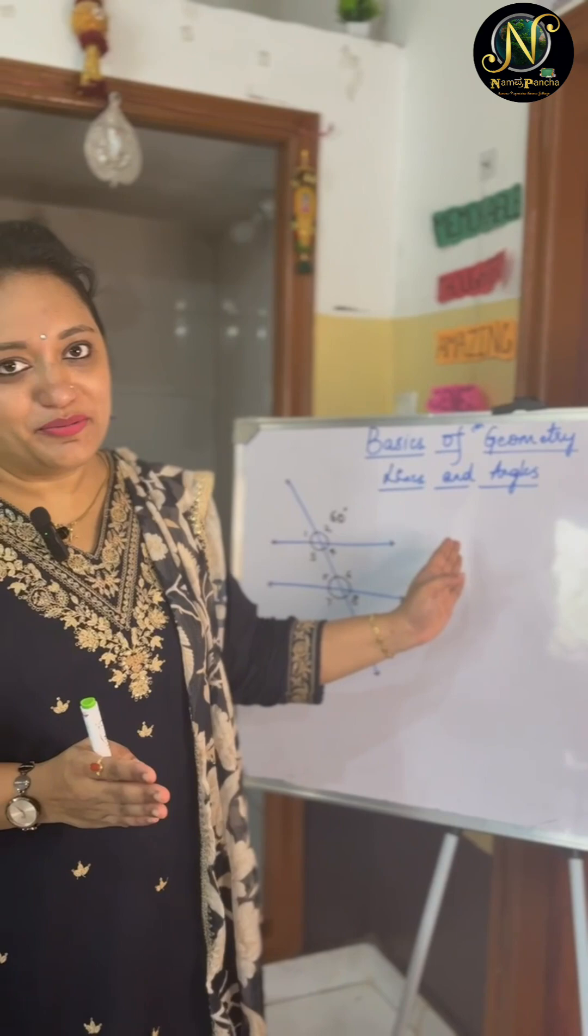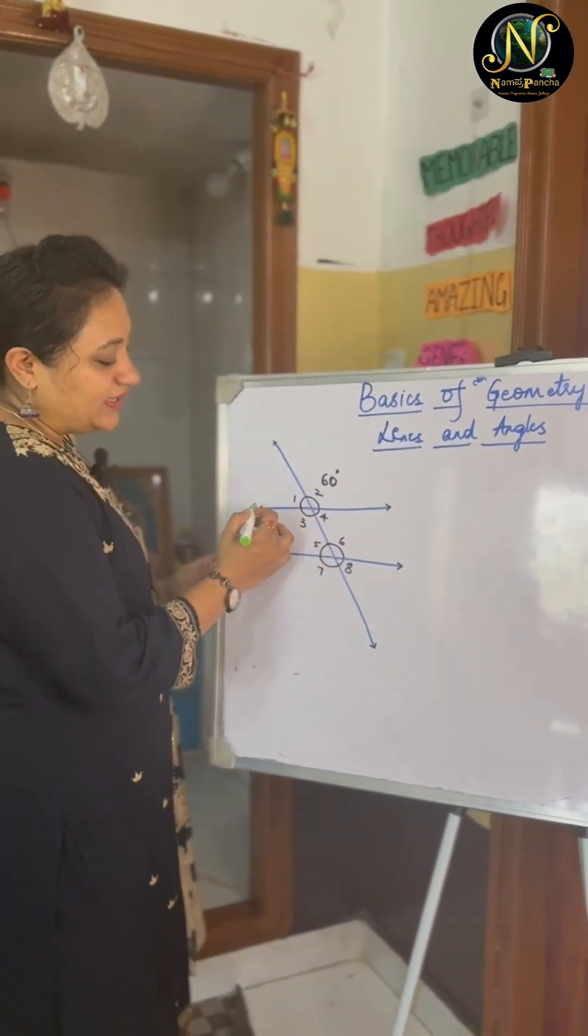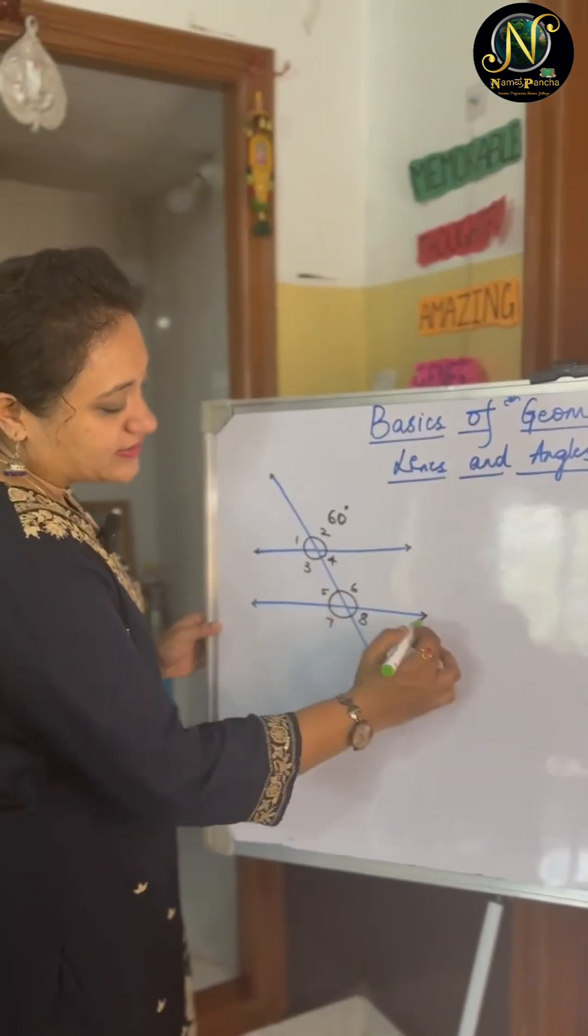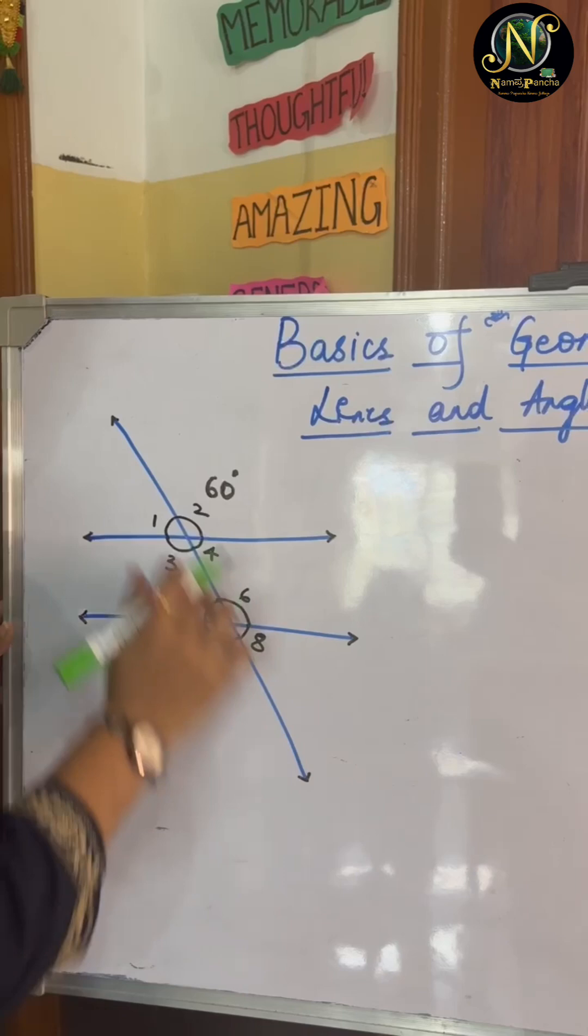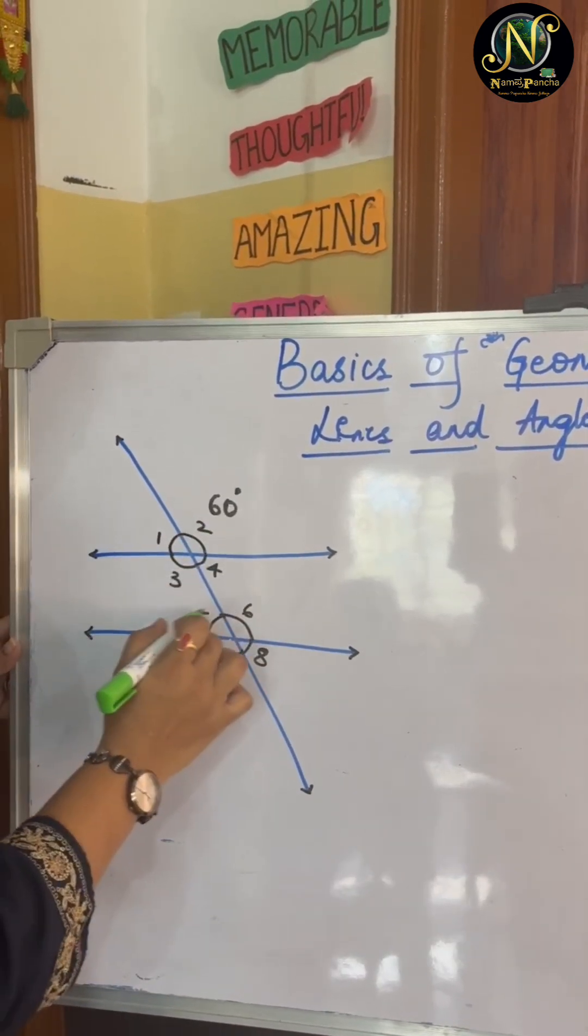This is a very important concept and it is a base for most of the angle problems. You can see here there are two parallel lines. Another line is intersecting these two lines and forming eight angles.